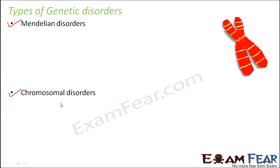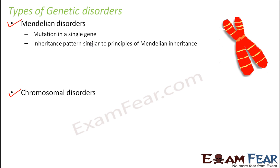Let us start with Mendelian disorders. These disorders happen due to mutation in a single gene — what we call point mutations. So they do not affect the entire chromosome as such. Their inheritance pattern is similar to the principles of Mendelian inheritance, and that is why they are called Mendelian disorders. The way they are inherited from one generation to the other is very similar to the way Mendel's rules of inheritance talk about genetics.